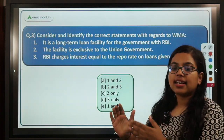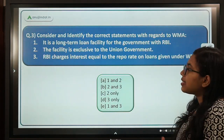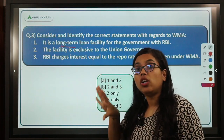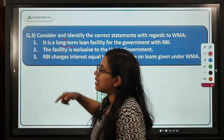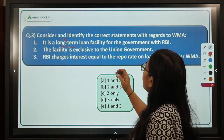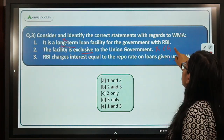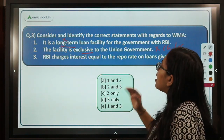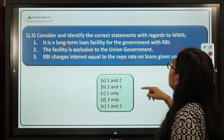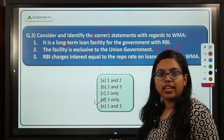The next question asks you to identify the correct statements with regard to WMA. The first statement says it is a long-term facility — this is wrong, it is a short-term loan facility provided by RBI to the government. The second statement says the facility is exclusive to the union government — again wrong, it is available to both central and state governments.